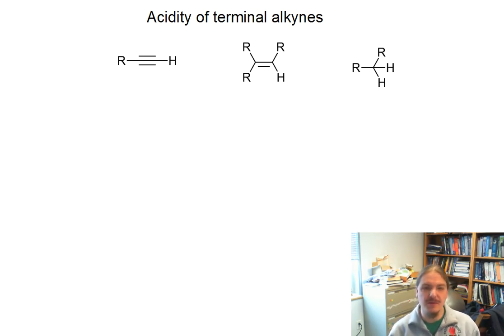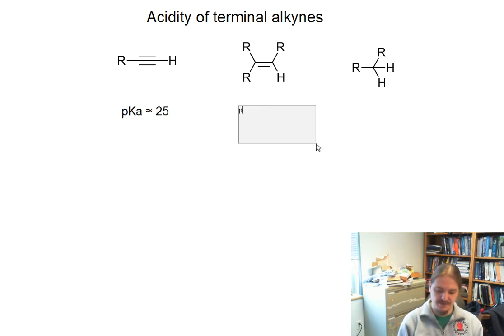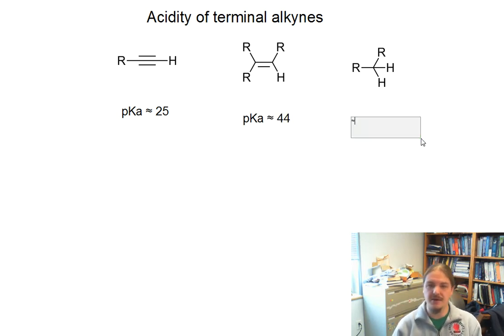As you might remember from your earlier studies of acids and bases in organic chemistry, terminal alkynes, or the hydrogen attached to an alkyne, is much more acidic than other hydrocarbons might be. The pKa of this functional group is around 25, where the pKa of the alkene is around 44, and the pKa of the alkane is around 50.